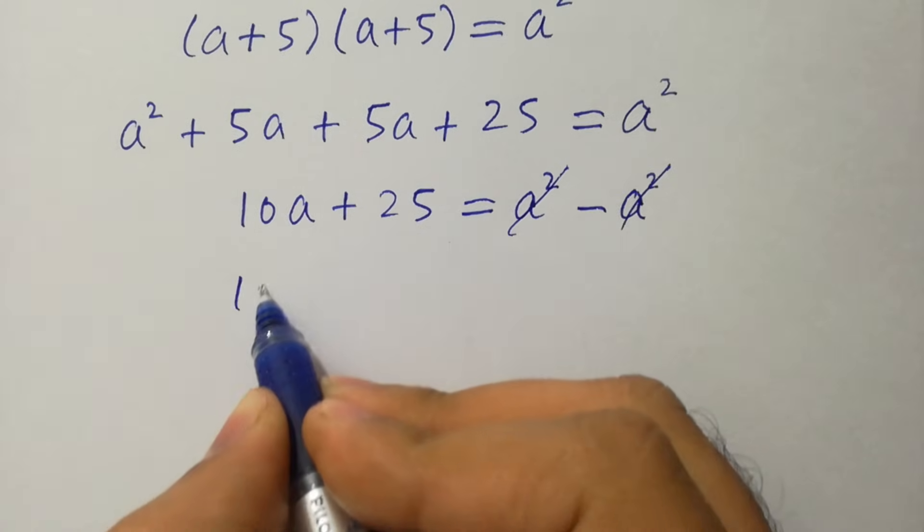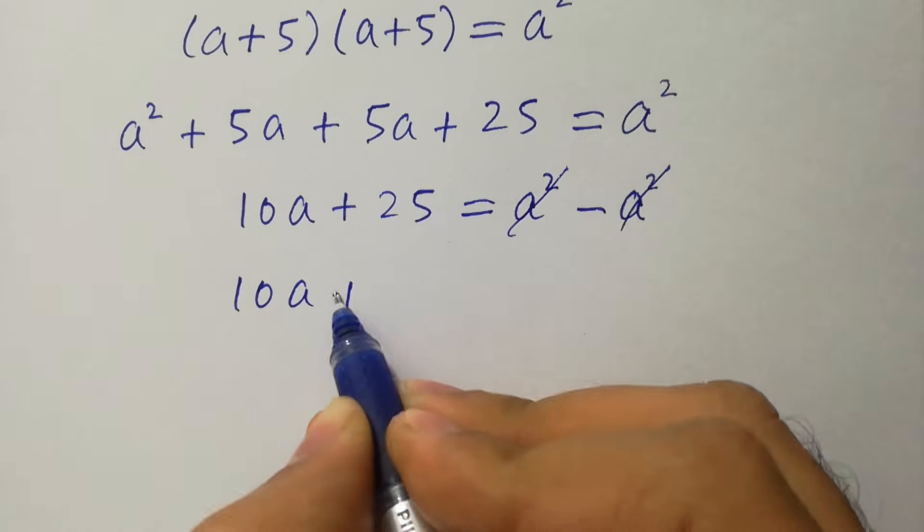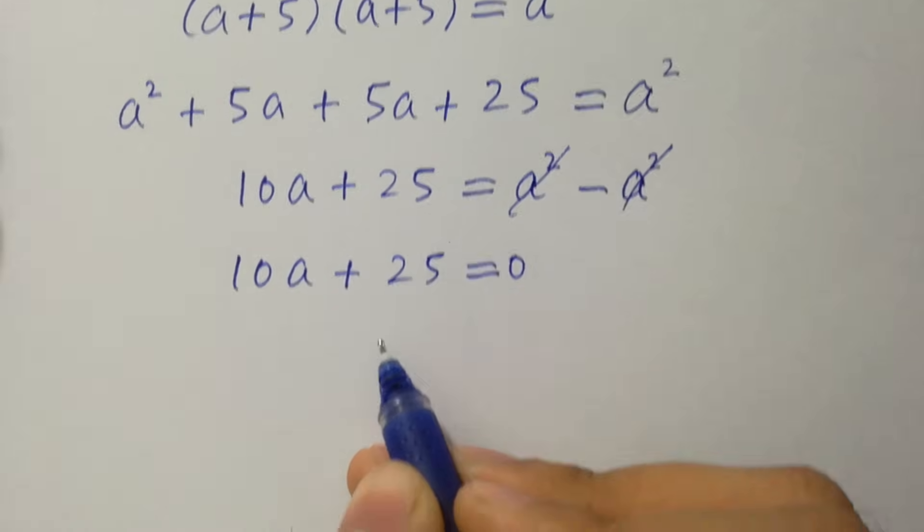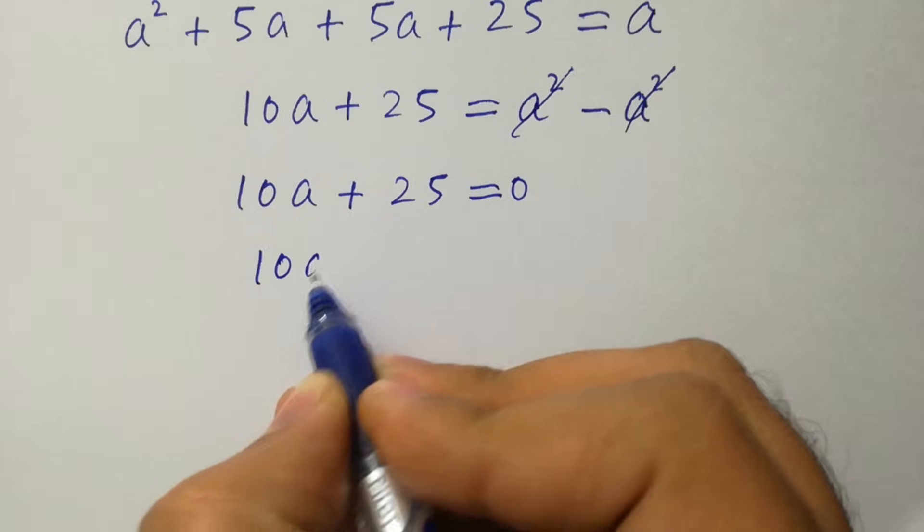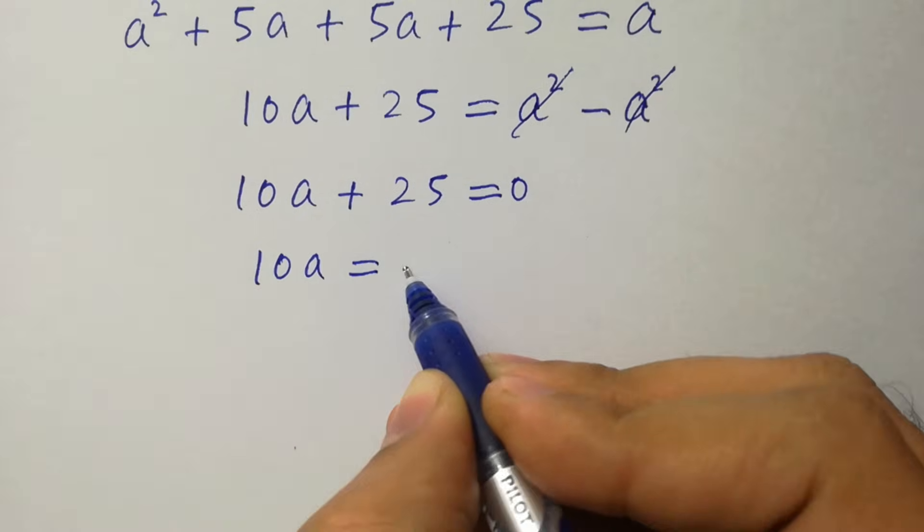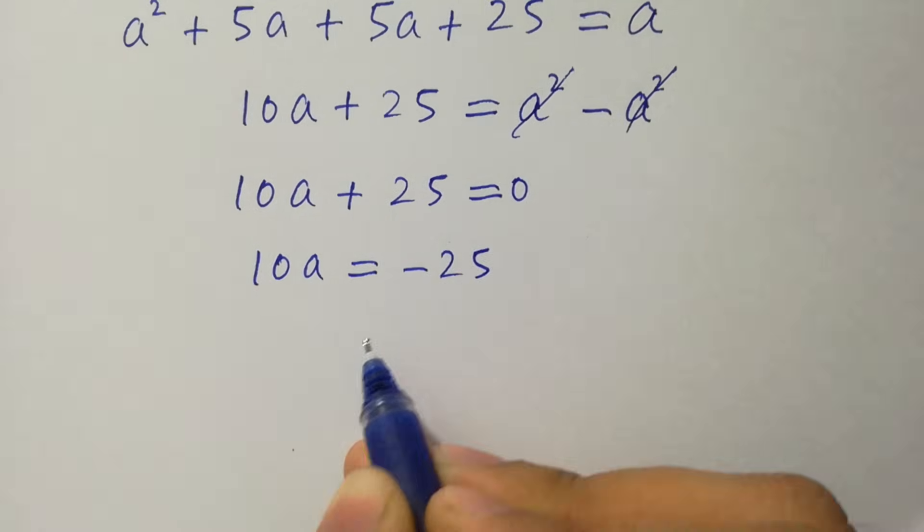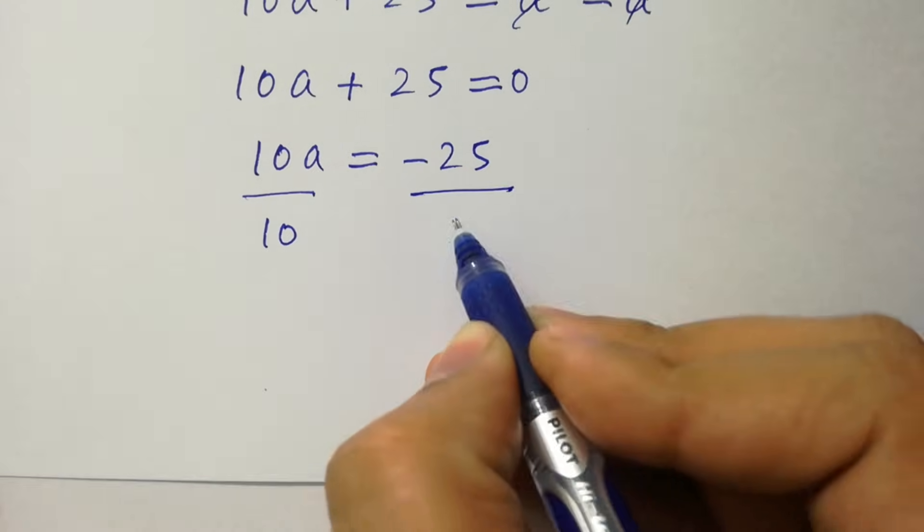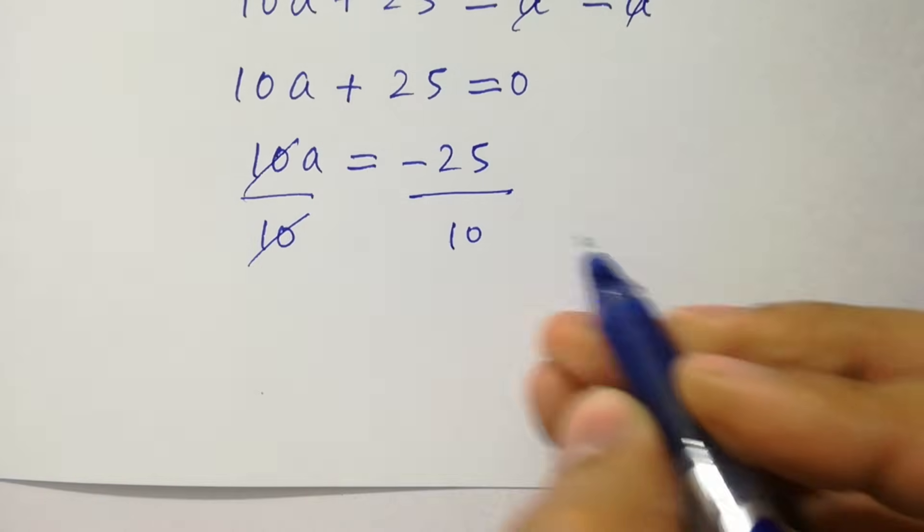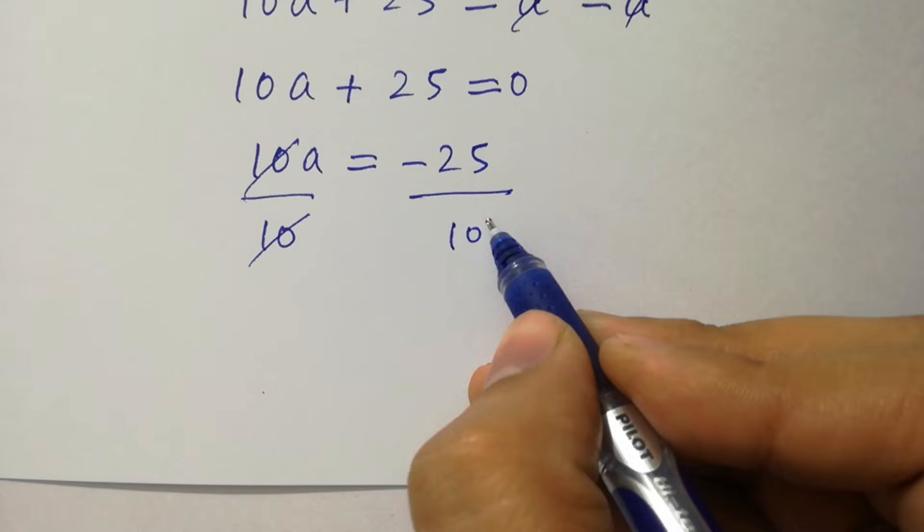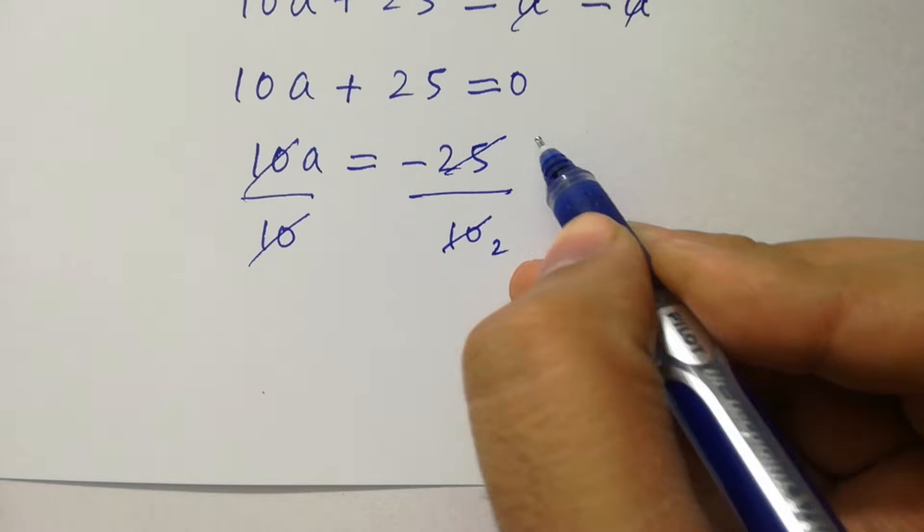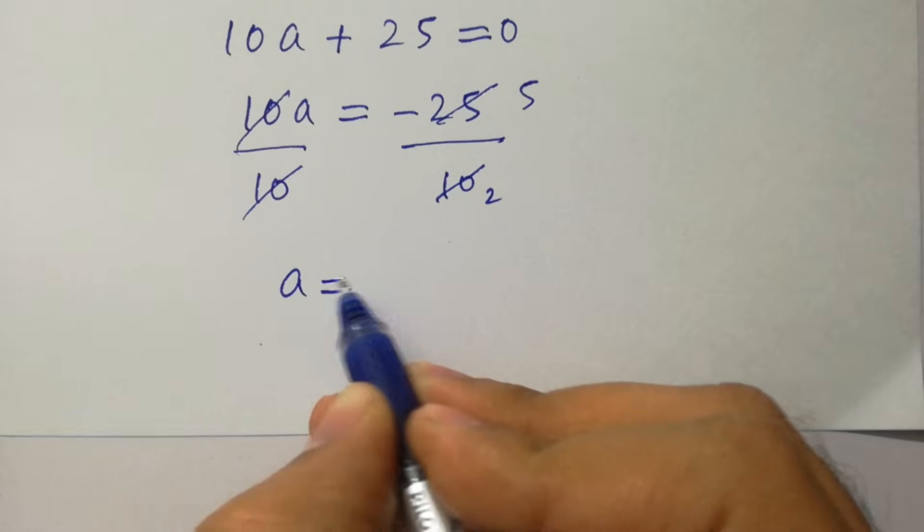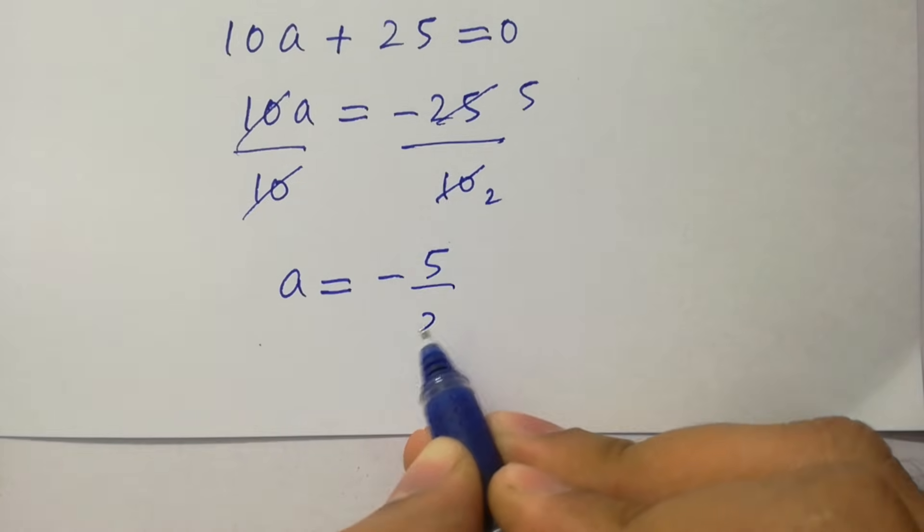We get 10a plus 25 equal to 0. 10a equal to minus 25 divided by 10 on both sides. 10 cancels. A we have here 5 times 2 is 10, 5 times 5 is 25. We get the value of a, which is equal to minus 5 over 2.